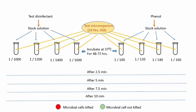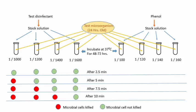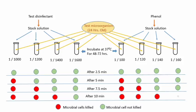Jaise hum dekhenge ki test disinfectant ke 1/1000 waale dilution ne bacteria ko 2.5 minute mein kill nahi kiya, par isi dilution ne bacteria ko 5 minute mein kill kar diya. Isi tarah se 1/1200 waale dilution ne bacteria ko 2.5 minute mein kill nahi kiya, 5 minute mein bhi bacteria ko kill nahi kiya, but 7.5 minute mein bacteria ko kill kar diya. Same observations with other dilutions of the test disinfectant. Isi tarah phenol ke dilutions ke saath bhi yahi check kiya — kaunsa dilution hai jisne bacteria ko 2.5 minute, 5 minute, ya 7.5 minute mein kill kiya. Yeh saare observations test disinfectant aur phenol dono ke saath observe kiye.